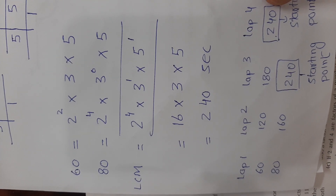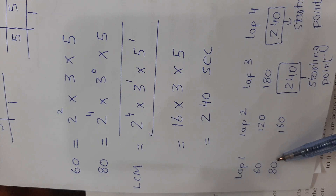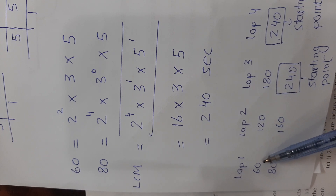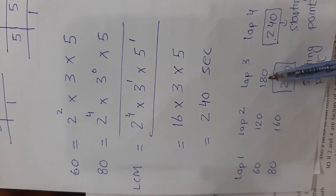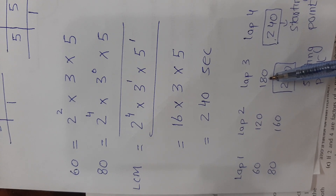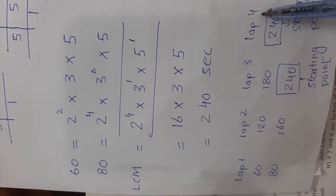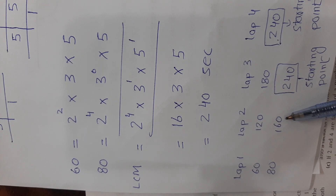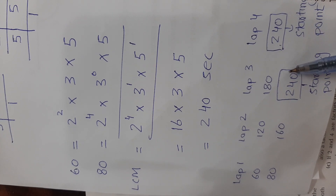Approach 1: Car X completes laps at 60, 120, 180, 240 seconds. Car Y completes laps at 80, 160, 240 seconds. After 240 seconds, car X has completed 4 laps and car Y has completed 3 laps — both are at the starting point.